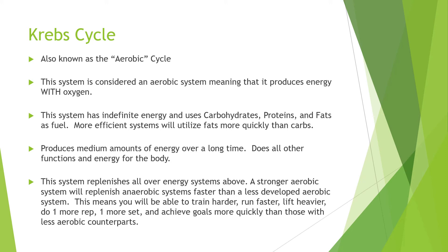The Krebs cycle produces medium amounts of energy but over a long period of time. It handles all the other functions and energy needs of the body, and it replenishes all the other energy systems. For example, if you're doing interval training — an all-out 25-yard sprint in the pool — the aerobic system replenishes the creatine phosphate system you used. With three to four minutes of complete rest, a stronger aerobic system means you can train harder, run faster, lift heavier, do one more rep or set, and achieve your goals more quickly.